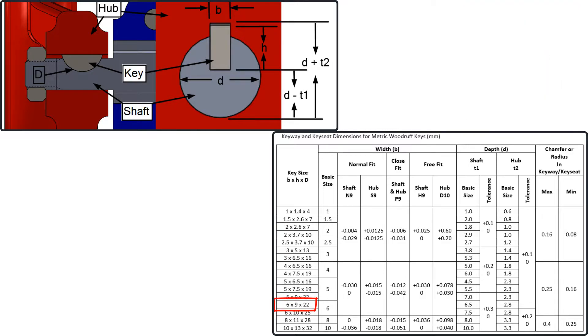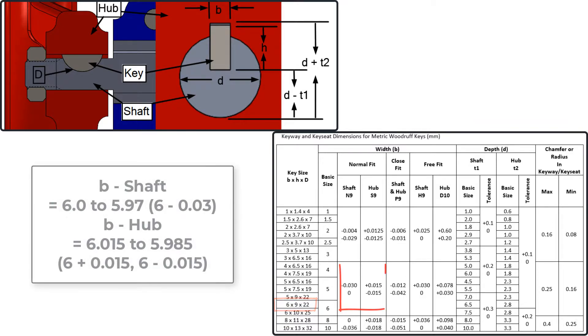If the part shown in the upper left hand corner required a 6 by 9 by 22 Woodruff key with a normal fit, the slot width in the shaft for the key seat would be 6 to 5.97 millimeters and the keyway width would be 6.015 to 5.985 millimeters.